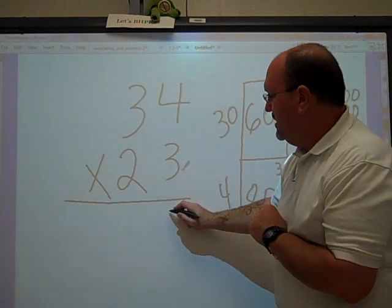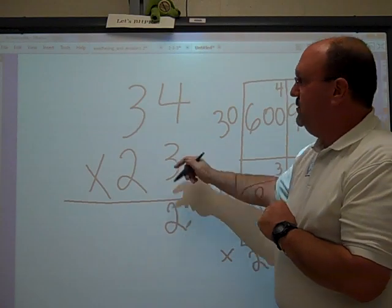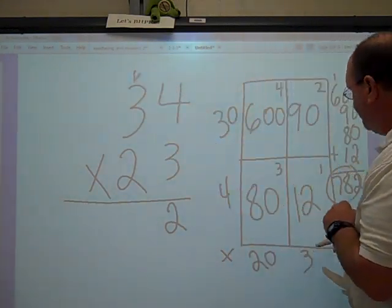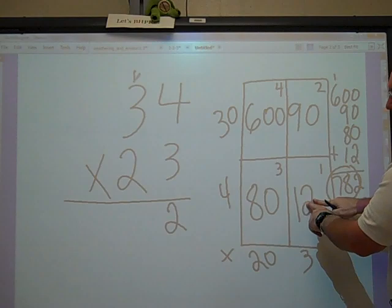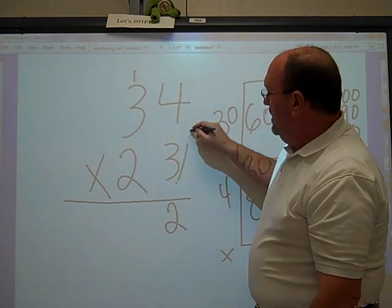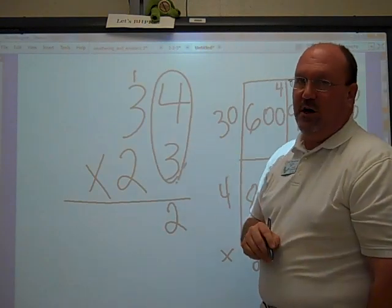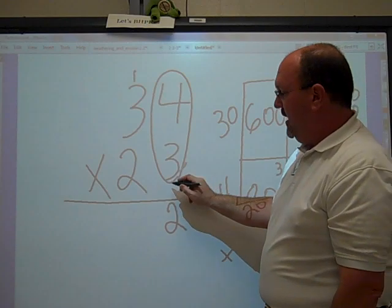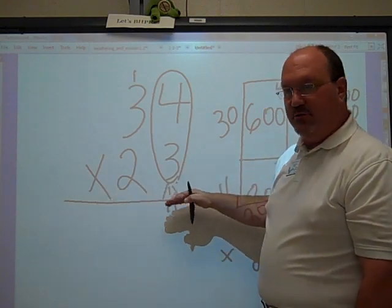3 times 4 is 12. We put our 2. We carry our 1. We make a butterfly wing. That's why we call it the butterfly method.